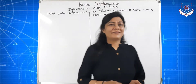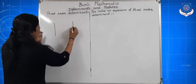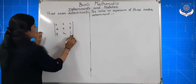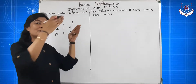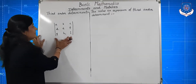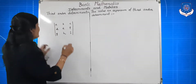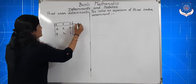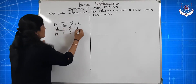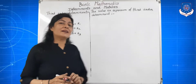Third order determinant: a square array symbol of nine elements a, b, c, d, e, f, g, h, i. Square array symbol means two parallel lines. Nine elements are there and they are real numbers. This type of determinant is called third order determinant. In this determinant, abc are the elements of first row R1, def are the elements of second row R2, and ghi are the elements of third row R3. So total there are three rows.